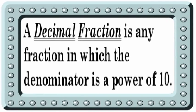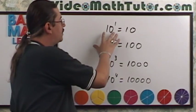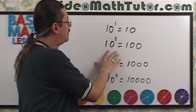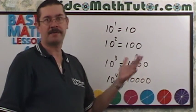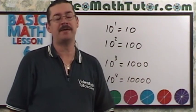A decimal fraction is any fraction in which the denominator is a power of ten. So a power of ten is really ten raised to some power, like ten to the first is ten, ten squared is a hundred, ten cubed is a thousand, ten to the fourth is ten thousand, so on and so forth.